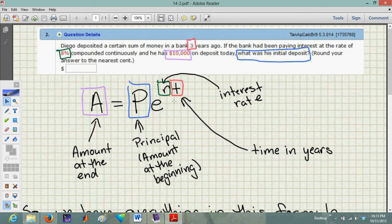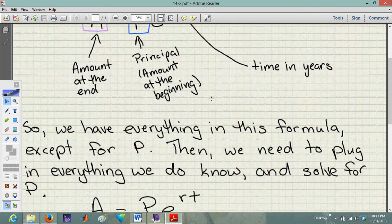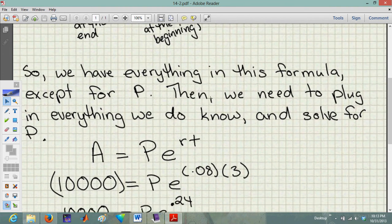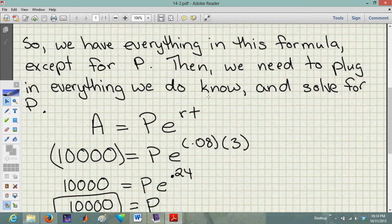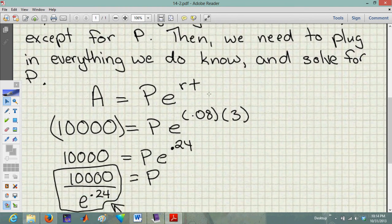And time in years - they're telling us he deposited this three years ago, so we've got that three right there in our question. Basically, we've got everything we need in this formula except for P. So what do we do? Plug in everything we know and then solve for P.